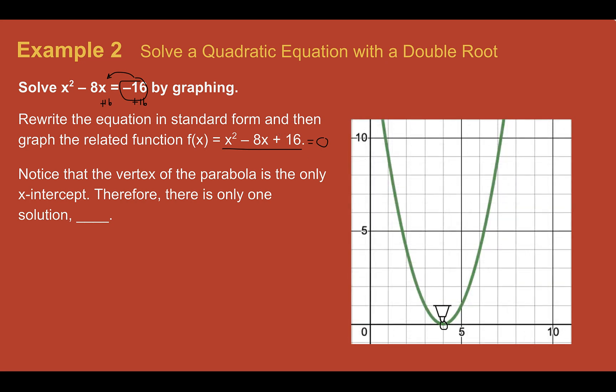Notice the vertex is on the x-intercept. So this makes it the only solution that is at four. It also makes it a double root. So this would be four and the other solution would also be four. But we really just say it once. It's just a double root.